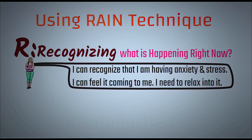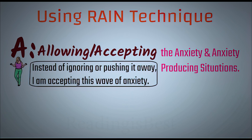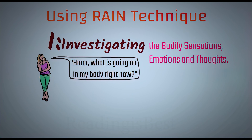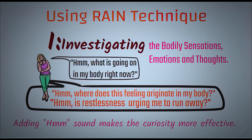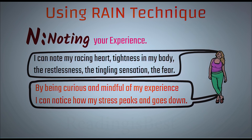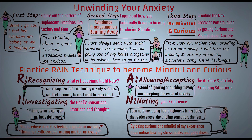In the RAIN technique, the first step is to recognize that stress is coming and try to relax. In the second step, you allow and accept this wave of anxiousness — don't try to avoid or ignore it. In the third step, you investigate the feeling of anxiety by being curious and asking questions like, 'What is going on in my body right now?' The final step is to note the experience — you might note a racing heartbeat or tightness in your body. Just keep noting your experience.